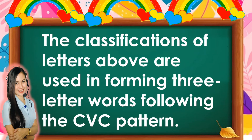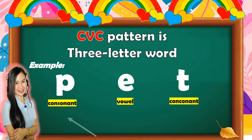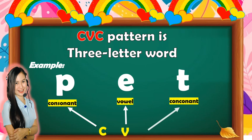The classifications of letters above are used in forming three-letter words following the CVC pattern. CVC pattern is a three-letter word. For example, the word 'pet': P is consonant, E is vowel, and T is consonant — that's the consonant-vowel-consonant, or CVC pattern.